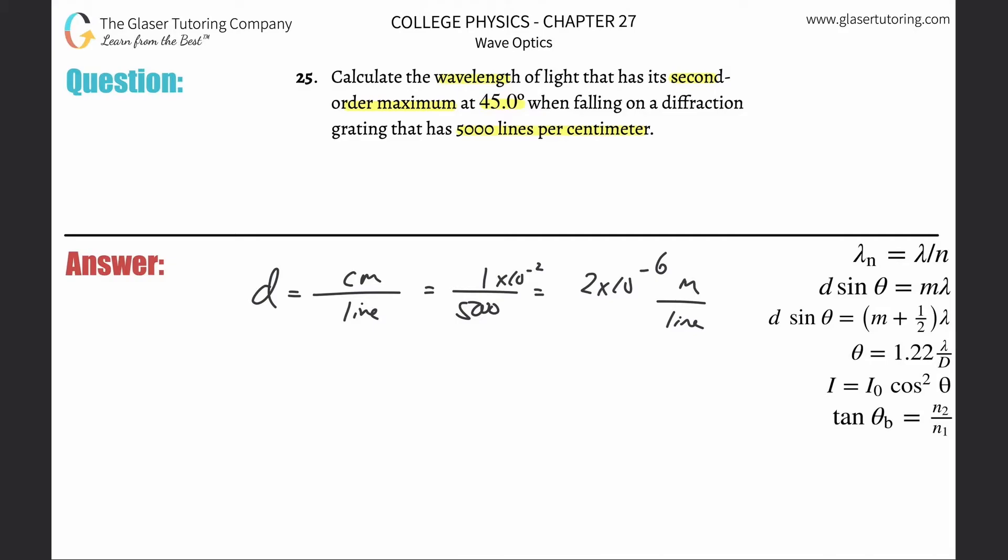Now we got enough information we need here in the form we need to now calculate the wavelength. Since they're talking about maximums, we're going to be using the constructive formula over here on the right hand side. It says that the distance between those lines multiplied by the sine of the angle is going to equal the order multiplied by the wavelength.